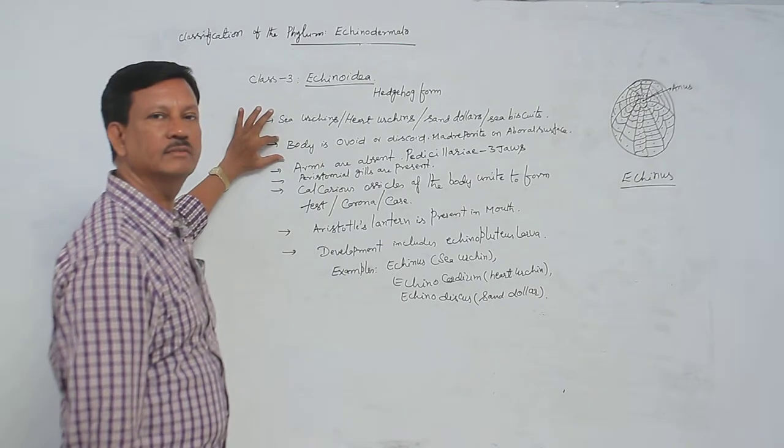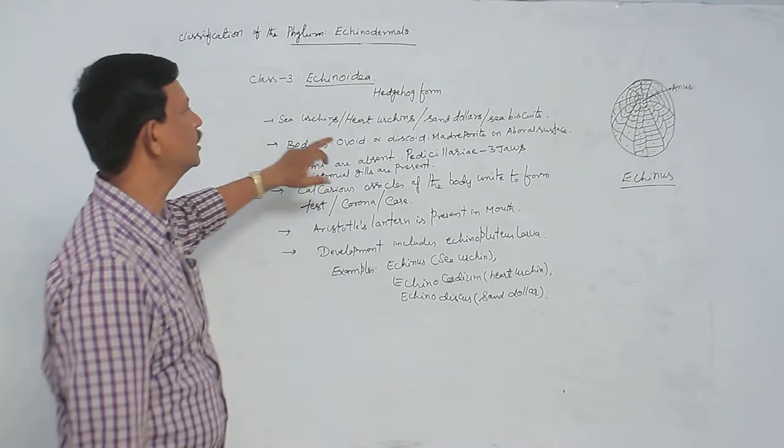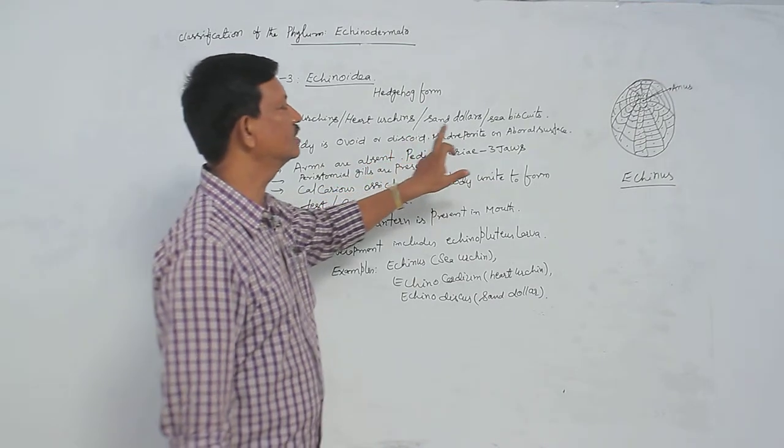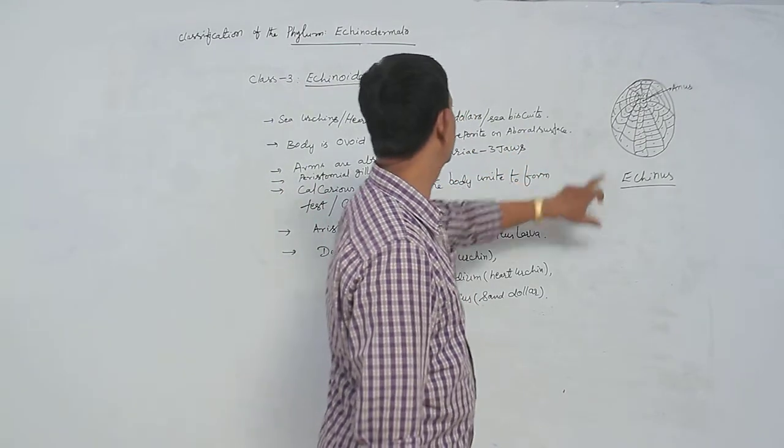Body is oval-shaped, round-shaped, or disc-shaped. There are no arms present on the body.